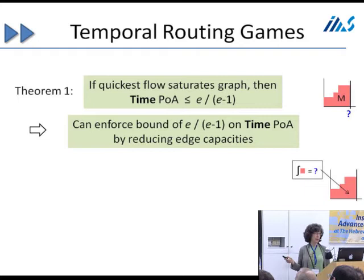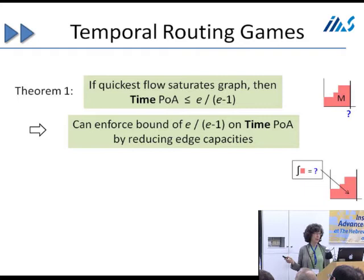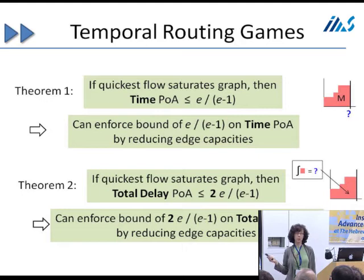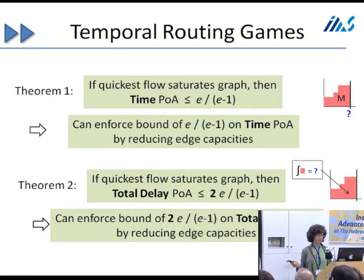Our first result is that if the quickest flow saturates the graph, the time price of anarchy is at most e/(e−1). Since the optimal hasn't changed after we modify the graph, it's at most e/(e−1) comparing to the optimal in the original graph. We also show that by the same capacity-reduction construction, the total delay price of anarchy is at most 2/(e−1).